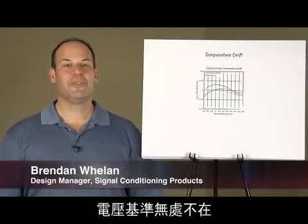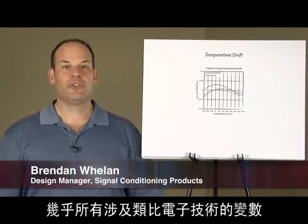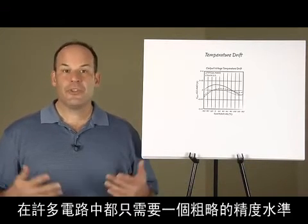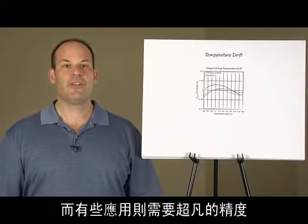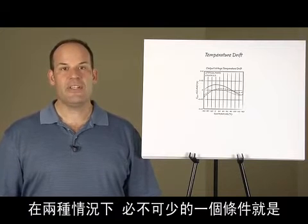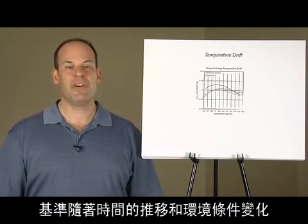Voltage references are ubiquitous as they are required for nearly every function involving analog electronics from bias to absolute measurement. In many circuits only a gross level of precision is required while some applications require extraordinary precision. In both cases it is essential that the references be stable over time and environmental conditions.